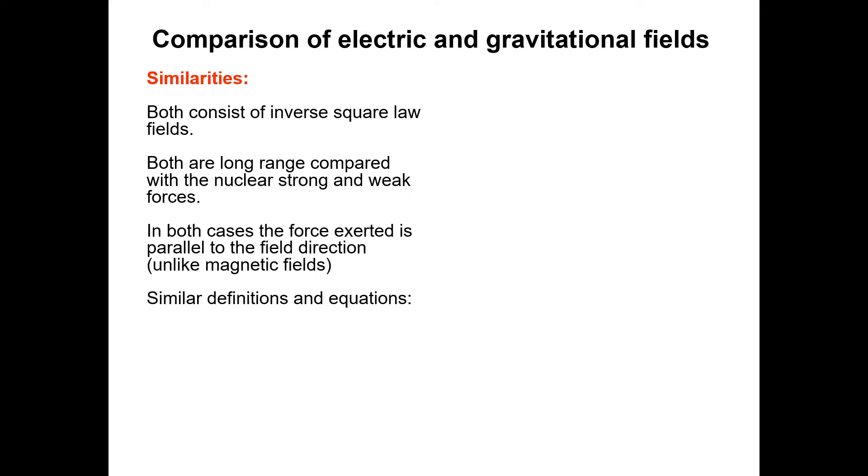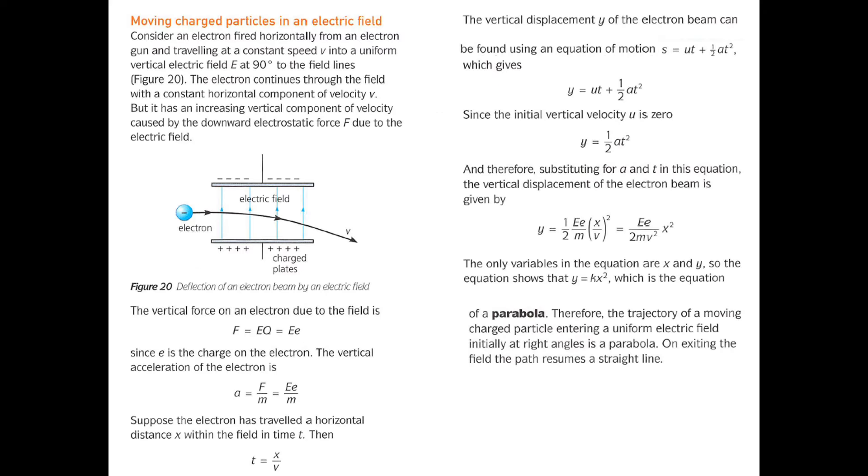Finally then, sometimes you can be lucky to get this kind of question. A quality of written communication question, five or six marker to compare the similarities and differences of both electric and gravitational fields. They're both inverse square laws, both long range compared with the nuclear forces. The definitions have all got the same structure. Differences though, one is to do with charge, the other is to do with mass. The gravitational field force is always attractive, but electric fields can be repulsive or attractive. And then that bit about the vacuum being a maximum on the electric force for electric fields. The constants are such an order of magnitude in difference. You've got 6.67 times 10 to the minus 11 and 9 times 10 to the 9, 10 to the 20 difference between them.